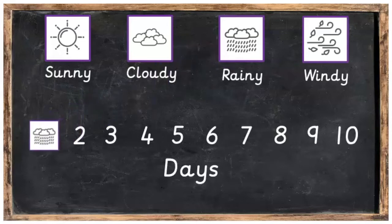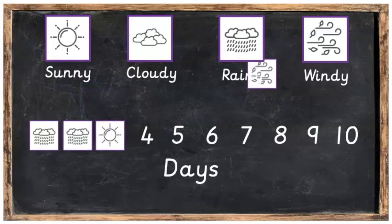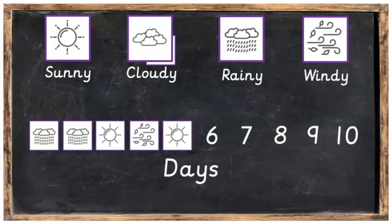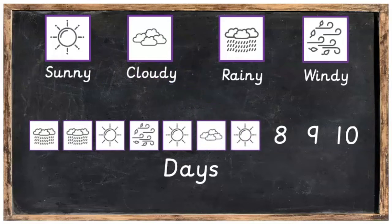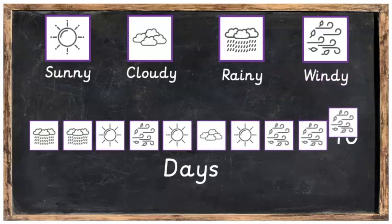On the first day it was rainy. On the second day it was also rainy. On the third day it was sunny. On the fourth day it was windy. On the fifth day it was sunny. Then it was cloudy and sunny again. On the eighth day it was windy, on the ninth day it was windy, and on the tenth day it was windy as well.